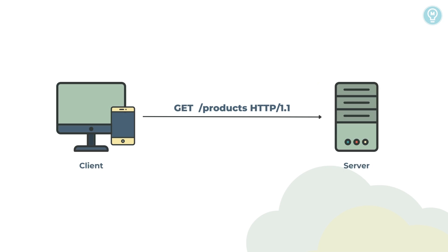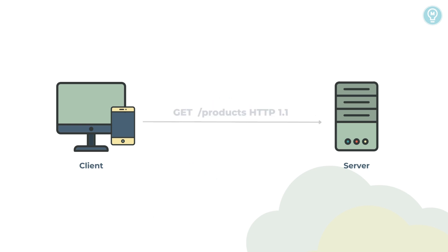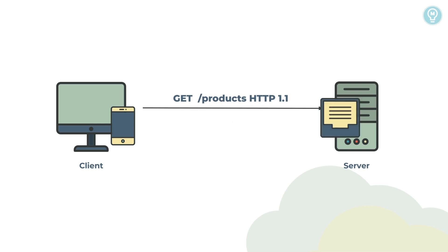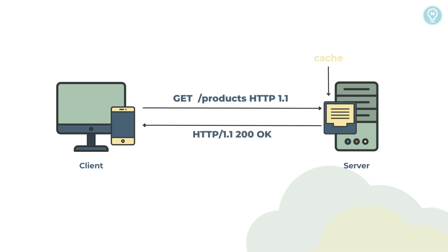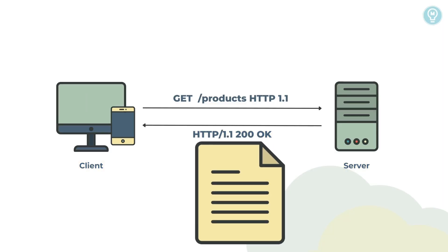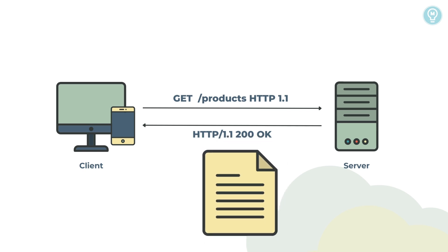To request a specific resource, a parameter can be added to the endpoint URL. The server will process the request parameter and send a specific resource in the response body. Some API endpoints may take a lot of time to respond due to different reasons. One of the ways to improve API performance is to implement caching, which allows the client to reuse previously fetched data. Another reason why some endpoints may be slow is due to a huge amount of data to process. To fix this, the API should implement pagination.